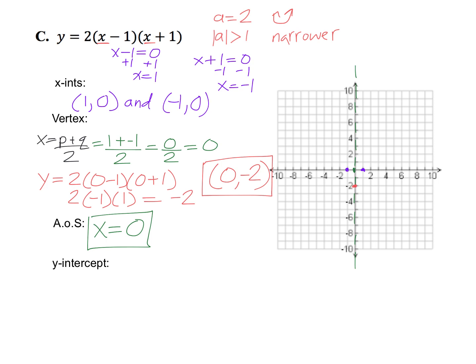And now to get more points, you have two options. You can either make a table, or you can use the 1, 3, 5 pattern. If you make a table, remember that the vertex, 0, negative 2, has to be the middle of your table. If you do the 1, 3, 5 pattern, just remember here, a is 2. I'm going to do the 1, 3, 5 pattern first.